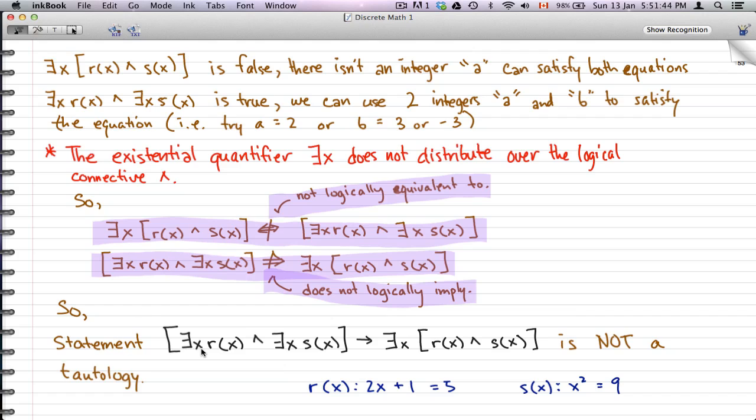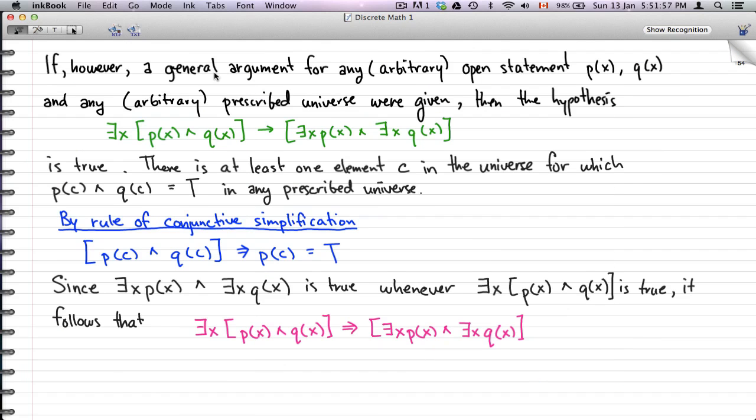However, if a general argument for any arbitrary open statement P(x), Q(x) and any arbitrary prescribed universe were given, then the hypothesis Ex [P(x) and Q(x)] implies [Ex P(x) and Ex Q(x)] is true.